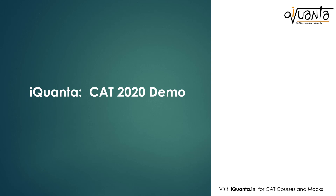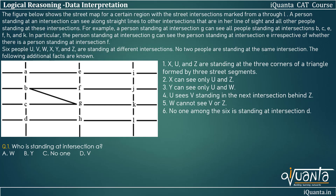Hello everyone. In this video we will be solving a logical reasoning set from CAT 2019 Slot 1. As I told you earlier, in LRDI you will be finding questions which will be based upon a whole new set of conditions. So this is an example of that. The question here is: the figure below shows the street map for a certain region with the street intersections marked from A through L.